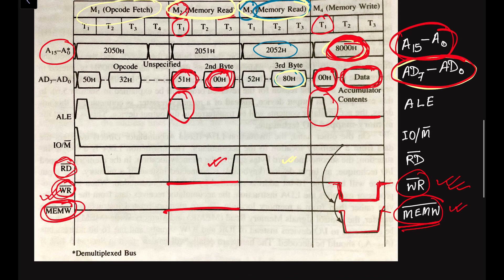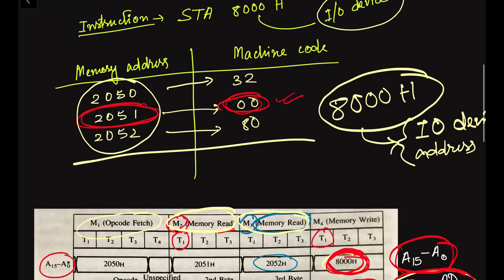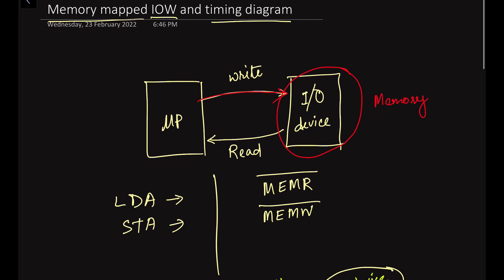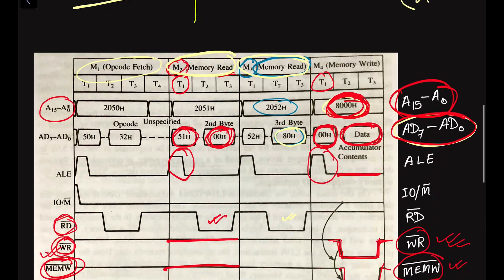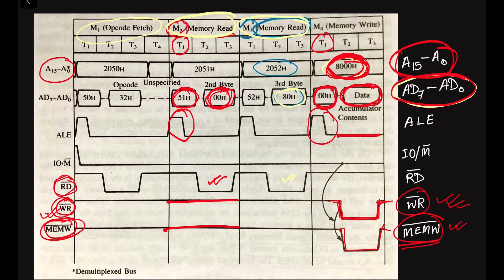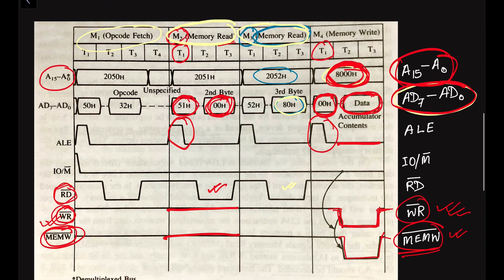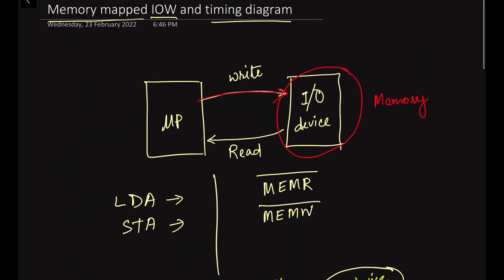This is all about the timing diagram for the memory mapped input output write machine cycle. We have considered all four machine cycles: opcode fetch, memory read, memory read, and memory write. We need four machine cycles for executing this instruction. I hope you are benefited from this video. Please like, share, and subscribe to my channel. If you have any questions, please put them in the comment section below. Thank you.